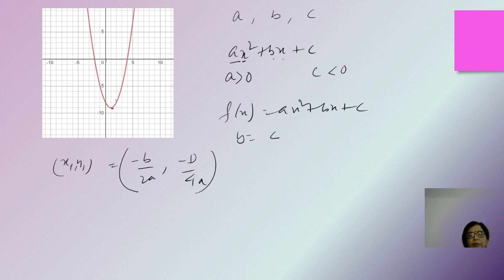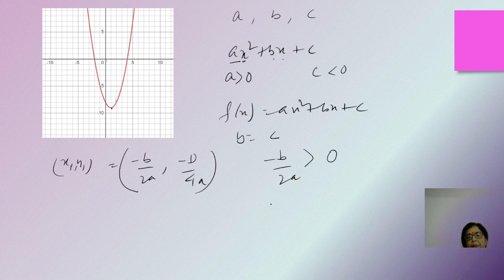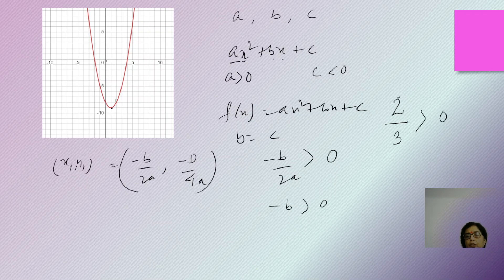If the vertex is in the fourth quadrant, then -b/2a > 0. Since the parabola opens upwards, a > 0. For this condition to hold, -b must be greater than 0. Using a fraction analogy: if 2/3 > 0 and 3 is positive, then 2 must also be positive. So if a is positive and -b/2a > 0, then -b > 0.